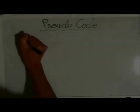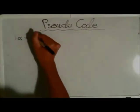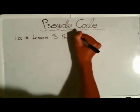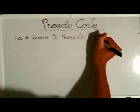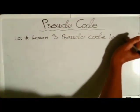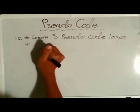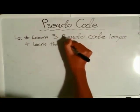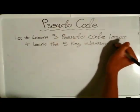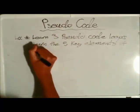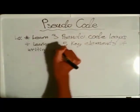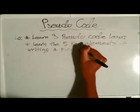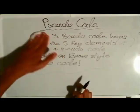Today we are going to be looking at pseudocode. So let's look at our learning objectives. Today we are going to learn three pseudocode loops, then we are going to learn the five key elements to writing a successful pseudocode.